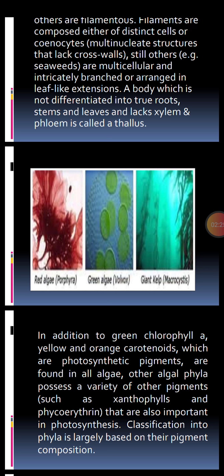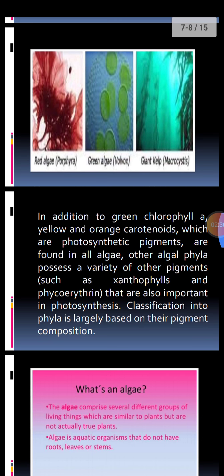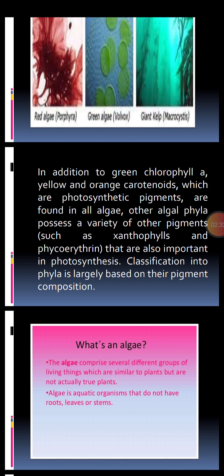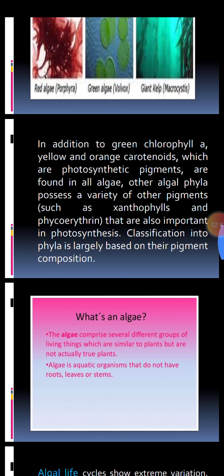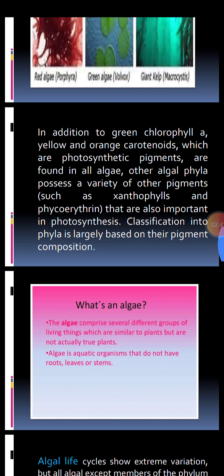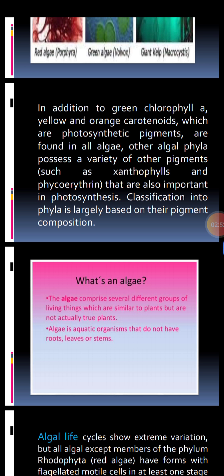In addition to the green pigment chlorophyll A, algae — including red algae and green algae — also contain yellow and orange carotenoids. These are all photosynthetic pigments involved in photosynthesis. Other algal phyla possess a variety of other pigments like xanthophylls and phycoerythrin, which are also important in photosynthesis. Classification into phyla is largely based on pigment composition.